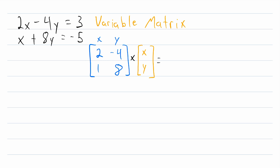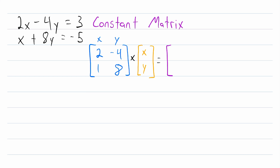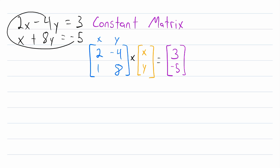Of course, we're still missing our constants, so the last thing we need is a constant matrix. This stores our constants — it's got one column, and then one row for each equation. In the first row, we put the constant of the first equation, which is 3. And then in the second row, we have the constant of the second equation, which is negative 5. And that is our constant matrix. Now we have represented this system of equations using matrices.